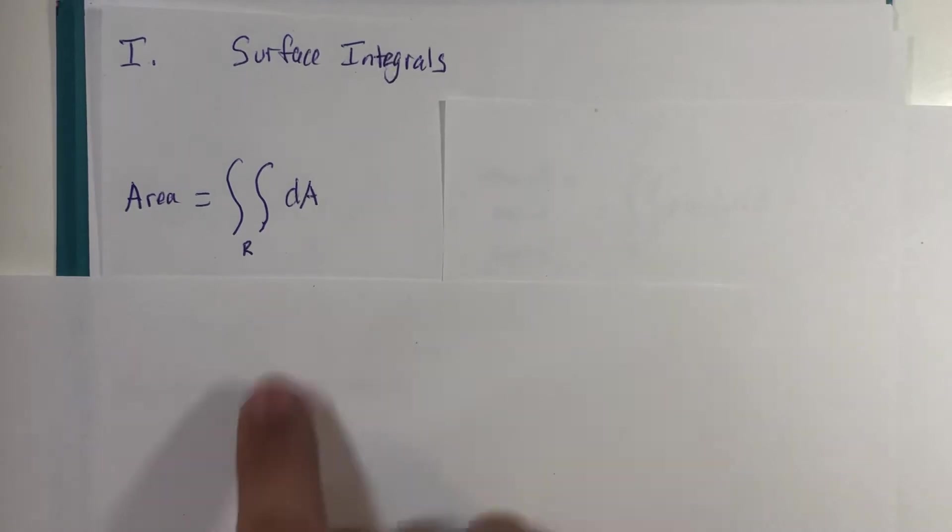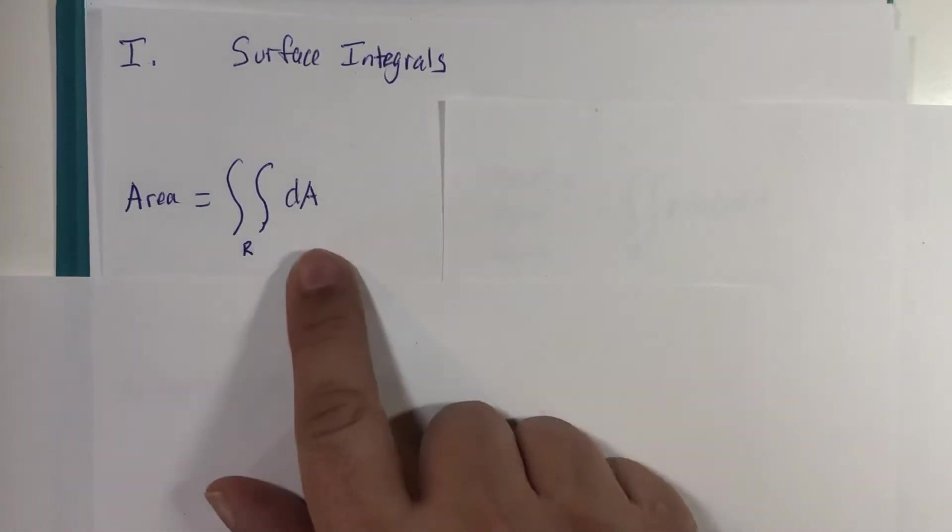So we have our double integral representing area. Remember, dA could be in terms dy dx, it could be in terms dx dy, or it could be converted to polar, R multiplied by dr d theta.